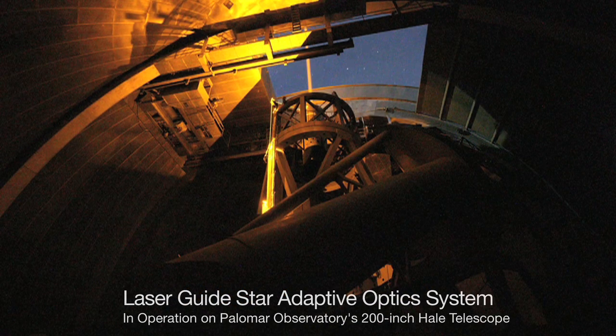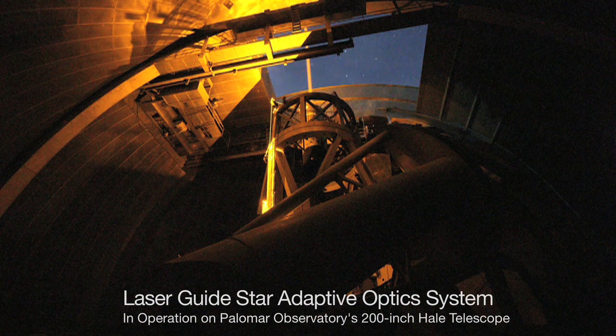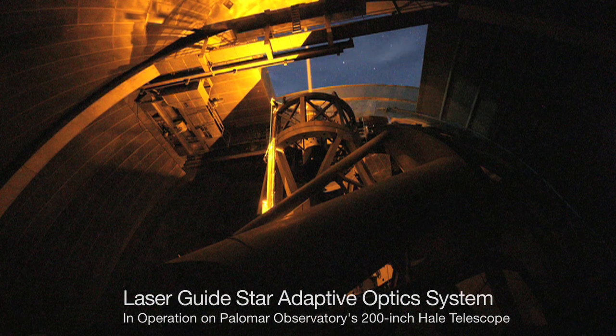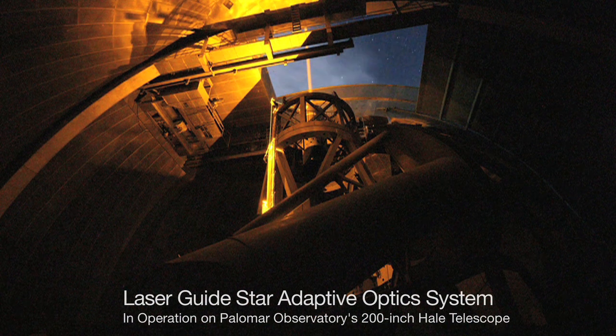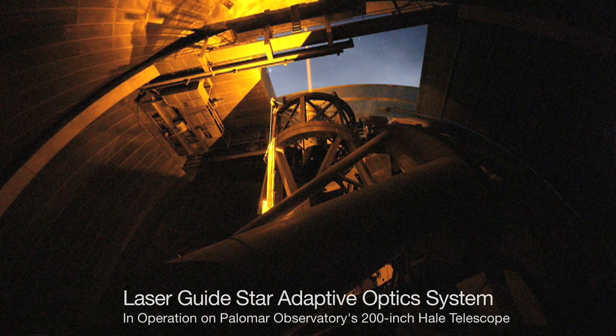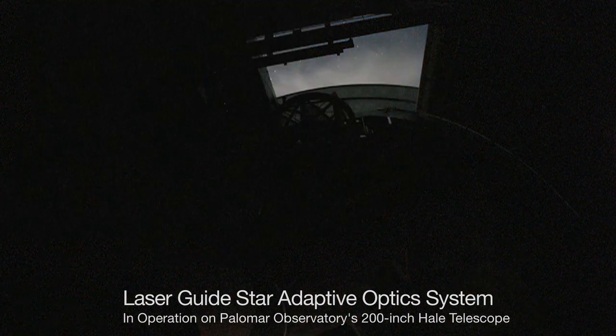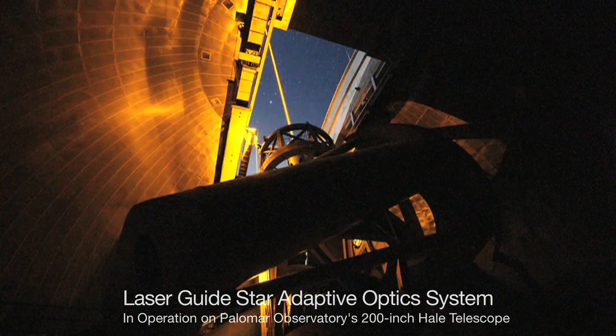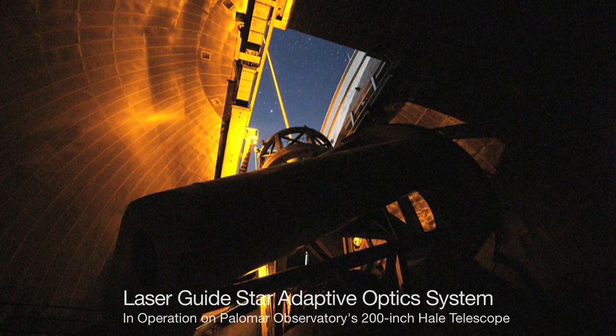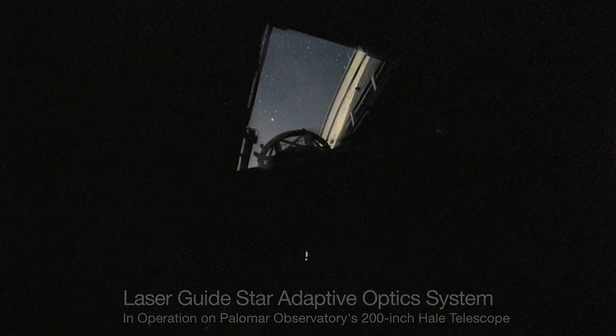Another more efficient way to do it is to shine a sodium laser, an orange laser, up into the sodium atomic layer at about 90 kilometers, very high in the sky, well above the disturbing atmosphere, and it produces an artificial star that we can use for wavefront sensing. That allows us to look anywhere in the sky without having to have a bright natural source nearby.